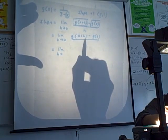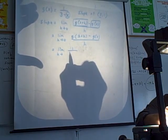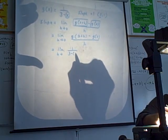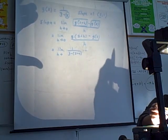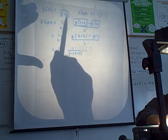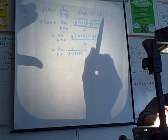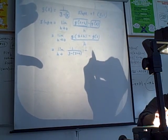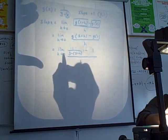Alright, so now we plug 2 plus h in place of x. So this is where you're going to have 1 over 3 minus, and then in parentheses, 2 plus h. g of 2, what would you get if you plug two in here for x? One. Yep, notice that's the same thing as I have up here on the point. That's just my y coordinate of one. All divided by h, and h is approaching zero.